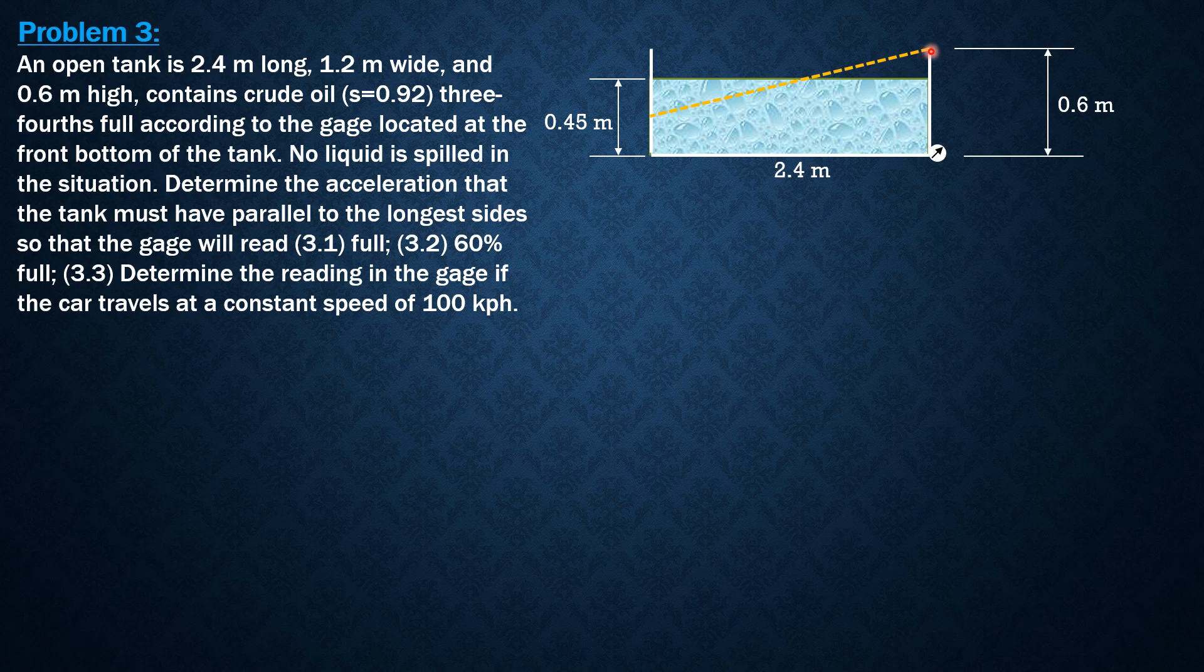Since no liquid is spilled and the gauge reads full, it should cross there so that this is 0.6. So this angle is denoted by theta or theta 1. This is also theta 1. So the tangent of theta 1 is 0.15 (0.6 minus 0.45) divided by half of 1.2, by this right triangle.